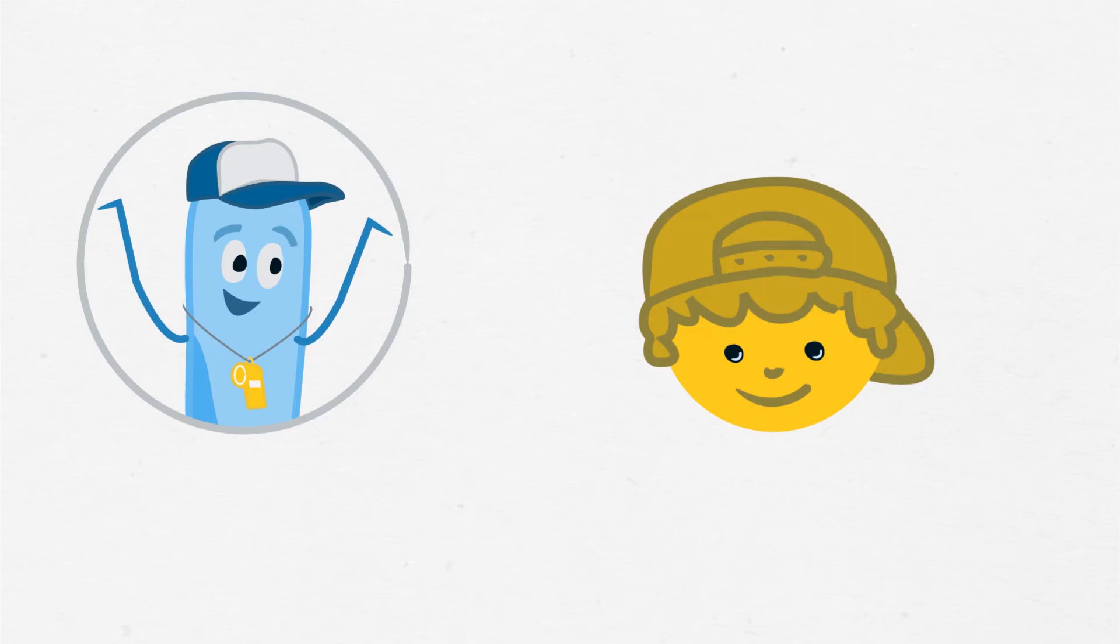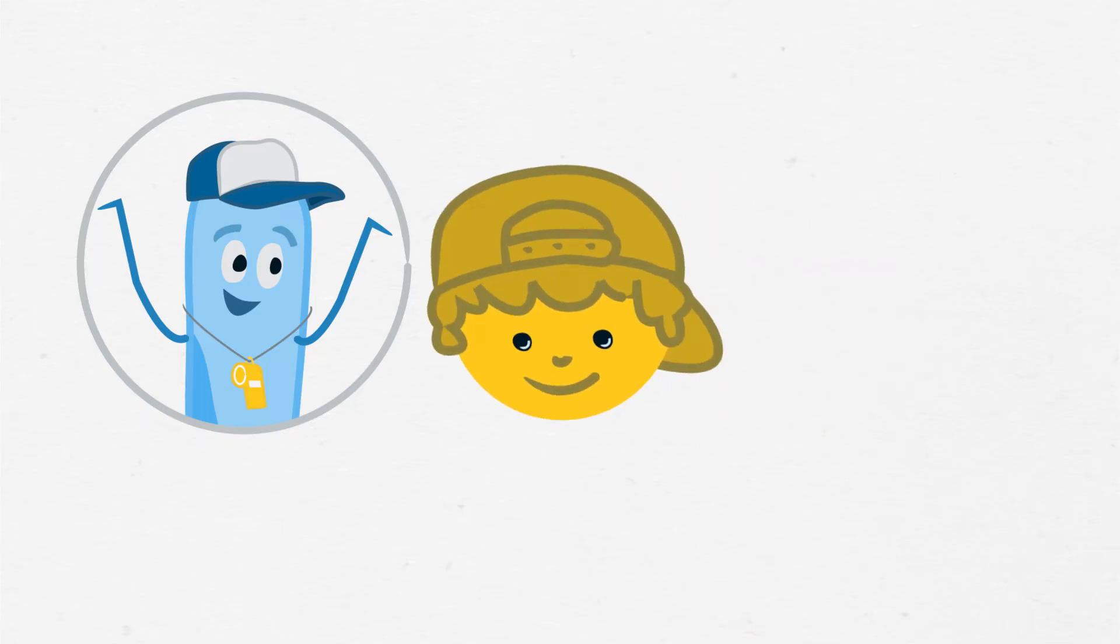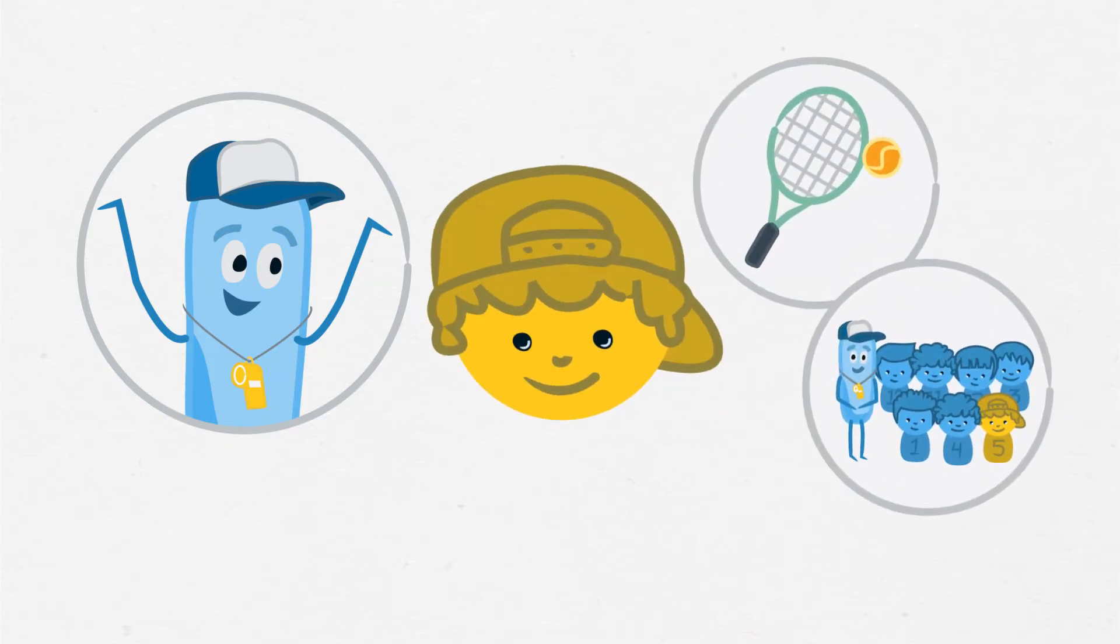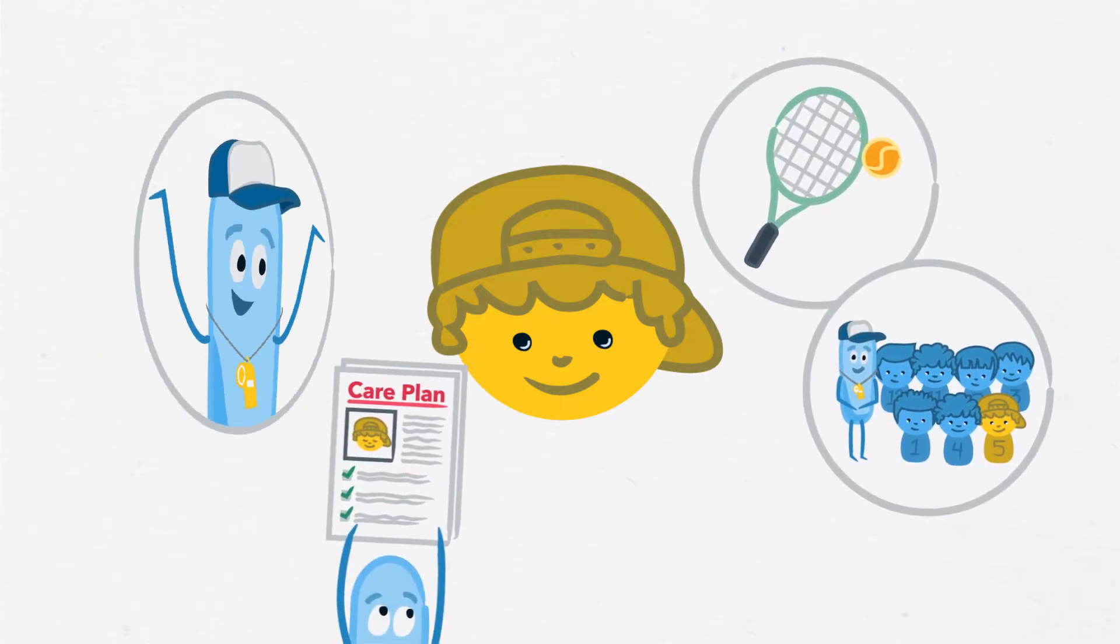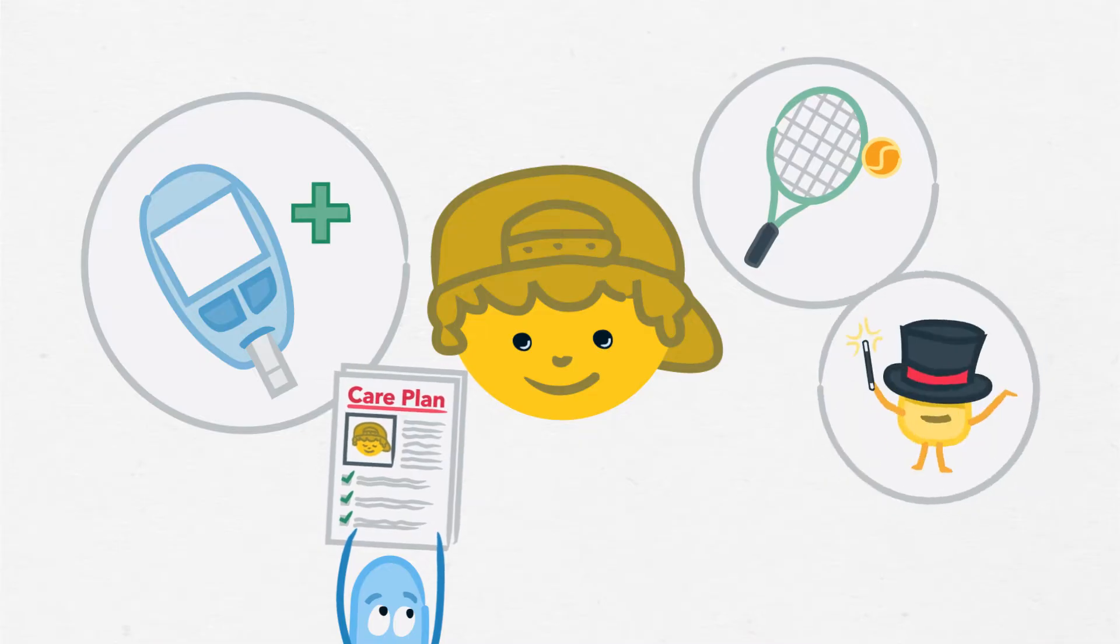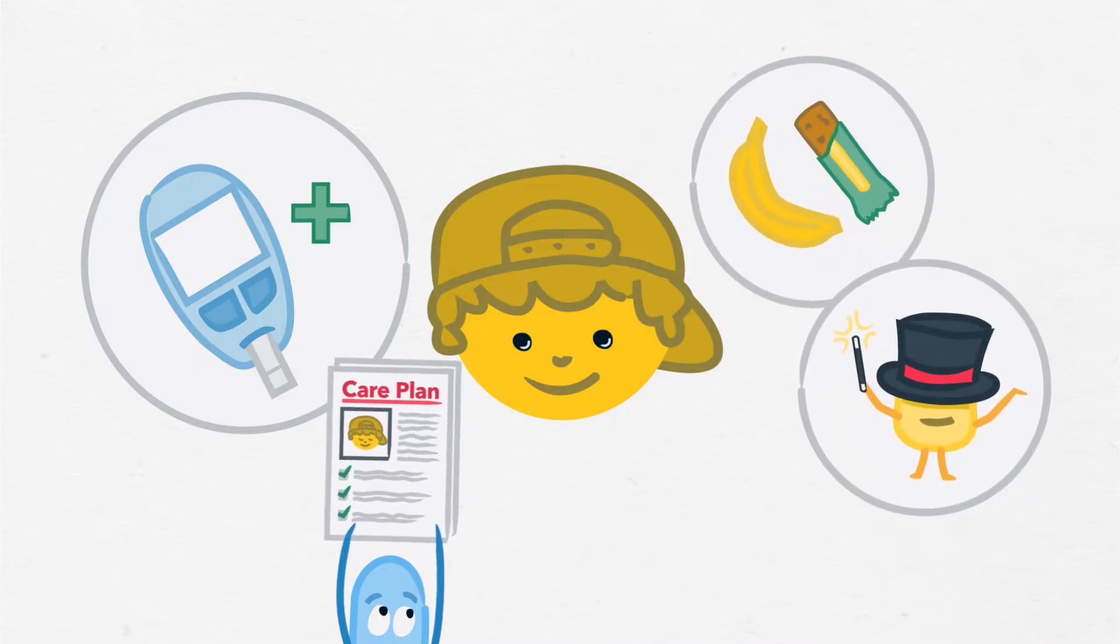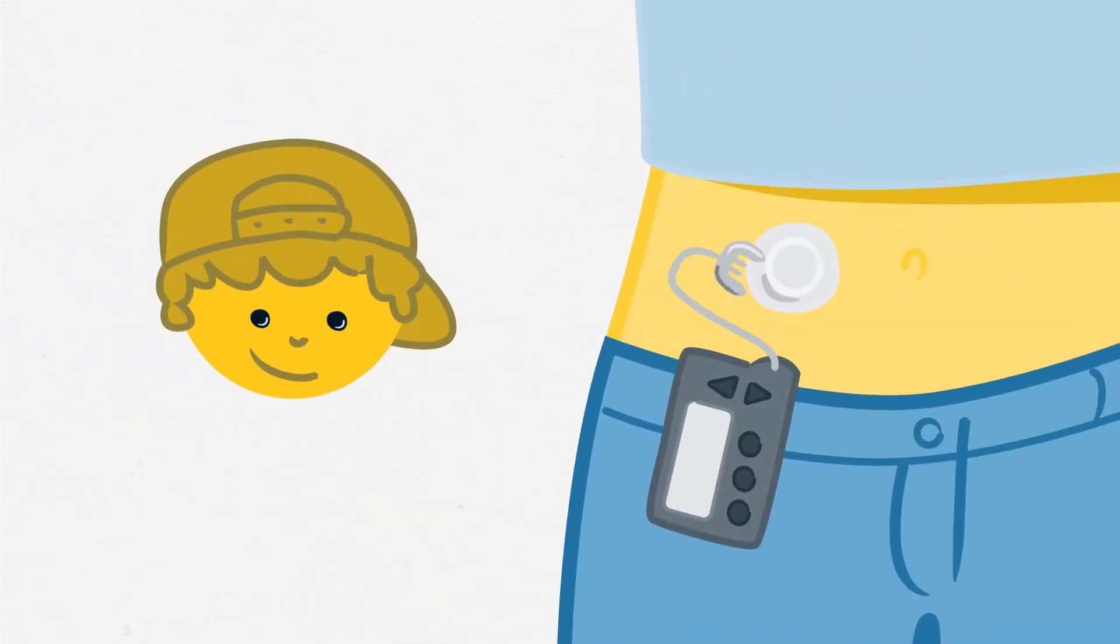They should be able to participate fully in gym classes and in any team or individual sports they choose, with a little more planning and care. This may involve extra blood sugar checks or a change in insulin or food. Some students may disconnect their pump temporarily or lower their background insulin for a short time.